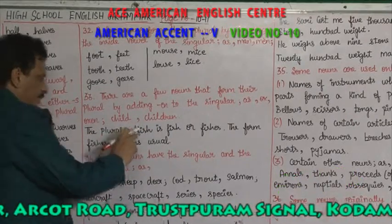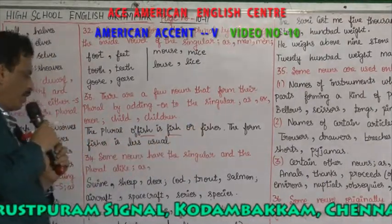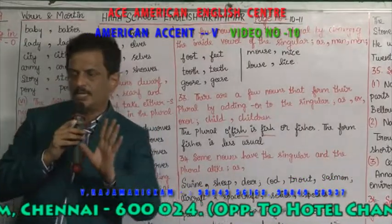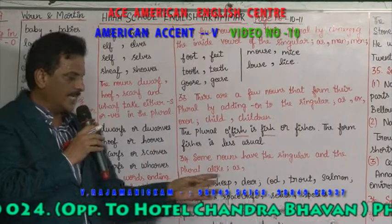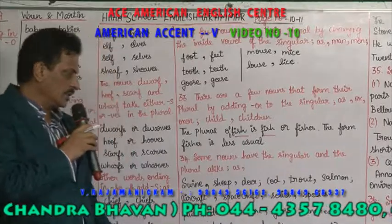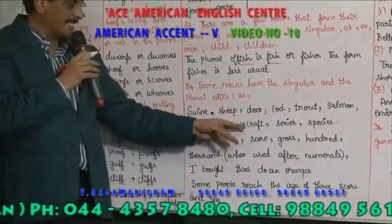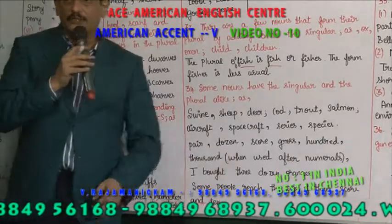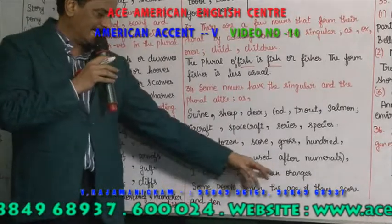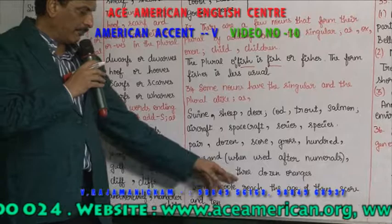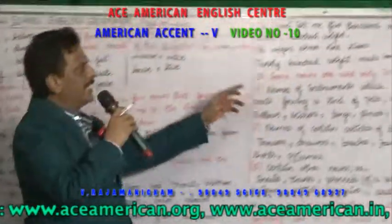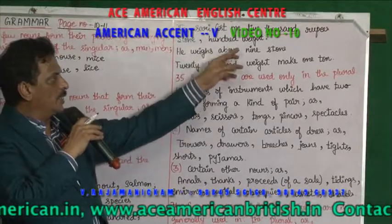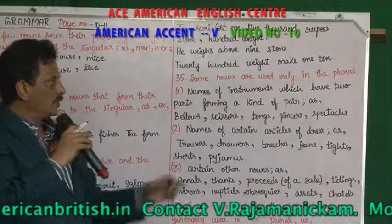The plural of fish is fish — it is not fishes. The form fishes is less usual. Some nouns have the singular and the plural alike — same spelling: swine, sheep, deer, trout, cod, salmon, aircraft, spacecraft, series, species, pair, dozen, score, gross, hundred, thousand — when used after numerals. For example: I bought three dozen oranges. Some people reach the age of three score.